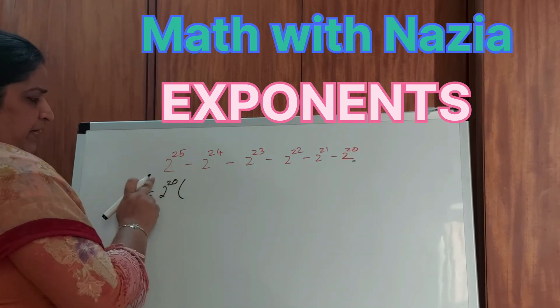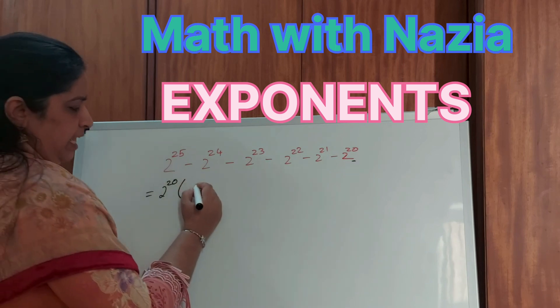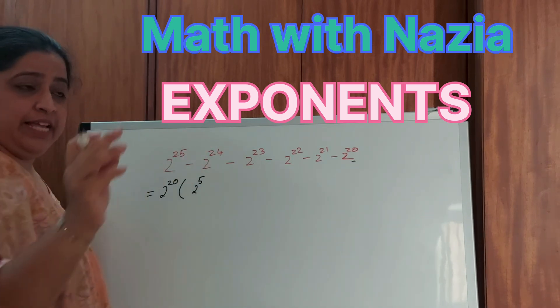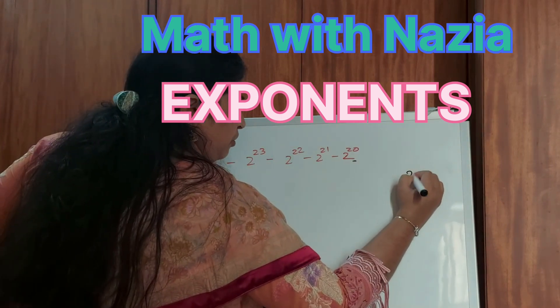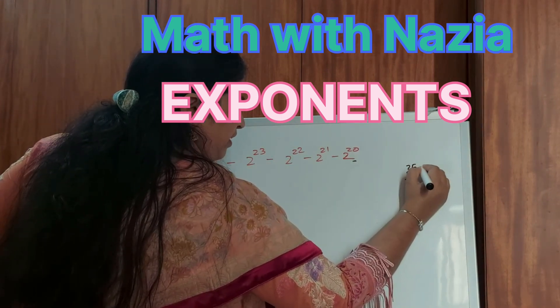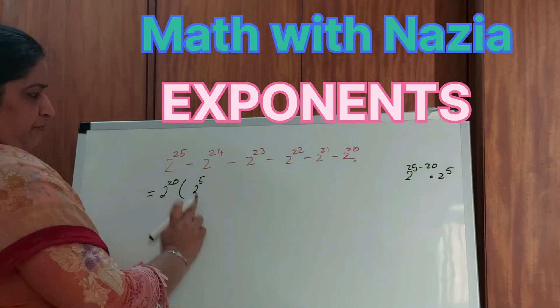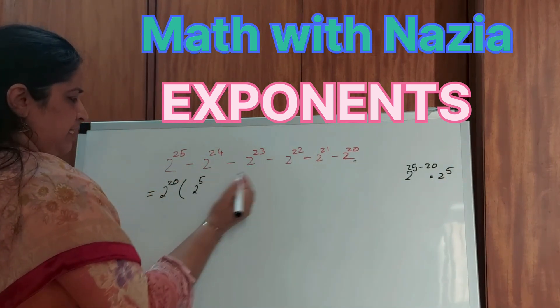If I take 2 to the power of 20 common, from 25 if I take out 20, I have 2 to the power of 5. I am using the exponent law that is 2 to the power of 25 minus 20, which is 2 to the power of 5.